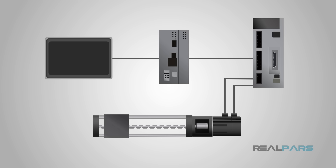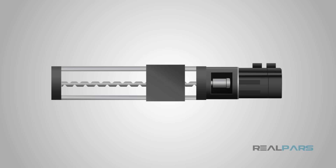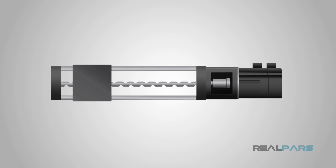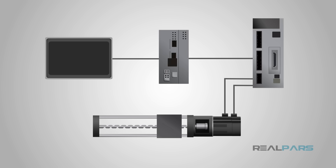A servo motor is a self-contained electrical device that rotates parts of a machine with high efficiency and great precision. The output shaft of this motor can be moved to a particular angle, position, and velocity that a regular motor does not have. The servo motor is a closed-loop mechanism that incorporates positional feedback in order to control the rotational or linear speed and position.